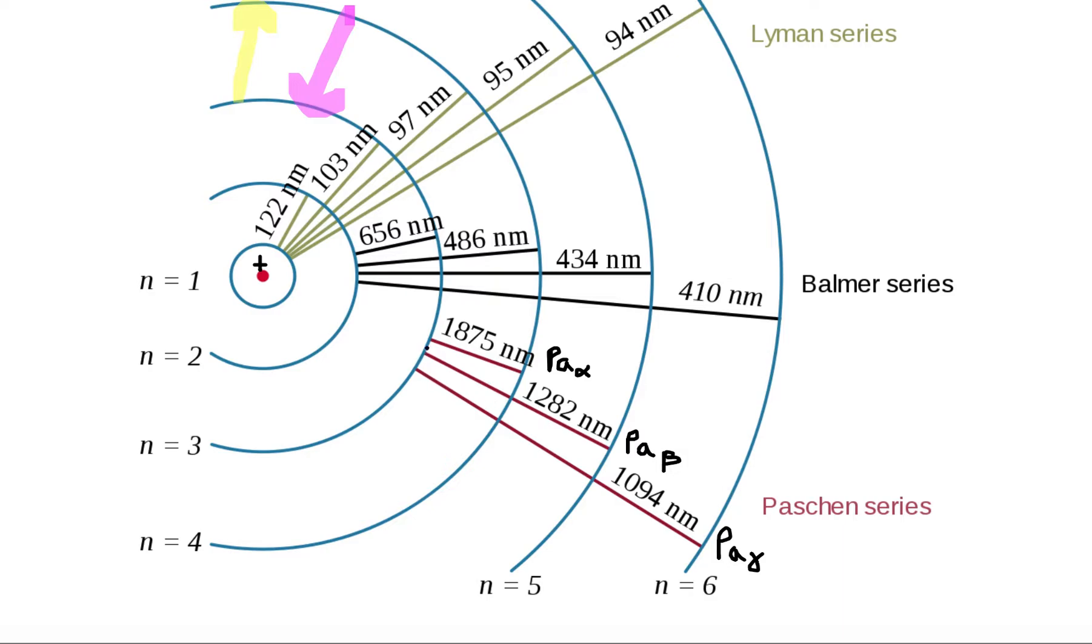Similarly, if it was in the n equals 3 level and the electron wanted to move to the n equals 5 level, it would need to absorb a wavelength photon that had exactly 1282 nanometers.